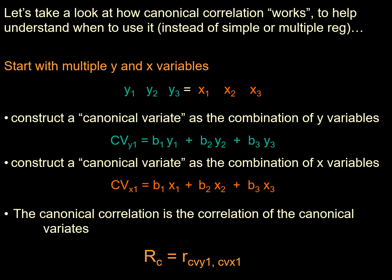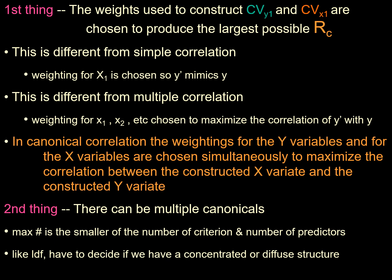The canonical correlation rc equals the correlation of the canonical variables CVy1 and CVx1. The canonical variates y1 and x1 are chosen to produce the largest possible canonical correlation. This is different from simple correlation and from multiple correlation — in multiple correlation, weights for x1, x2, etc. are chosen to maximize correlation of the combined x with y. In canonical correlation, the weights for both the y variables and x variables are chosen simultaneously to maximize the correlation between the constructed x and y variates.